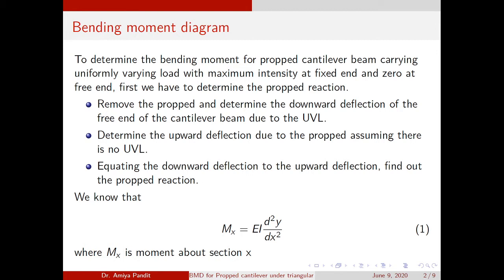Next, determine the upward deflection due to the prop, assuming there is no UVL. Then we will equate both deflections — the downward deflection due to the UVL equal to the upward deflection due to the point load at the free end. We use the formula Mx = EI d²y/dx², where Mx is the moment about a section x.